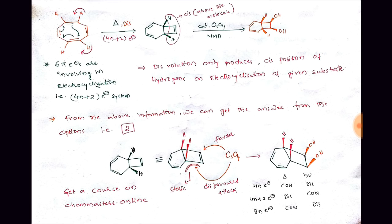Observing the product — I have drawn it for convenience — the two hydrogens in the product are projecting towards the upper side of the molecule. There is the possibility of osmium tetroxide attacking from two sides: above or below the molecule. If osmium tetroxide attacks from the below side, there is the possibility of steric repulsions due to the concave face, because the hydrogens projecting below form steric repulsions that reduce the capacity of osmium tetroxide to attack.